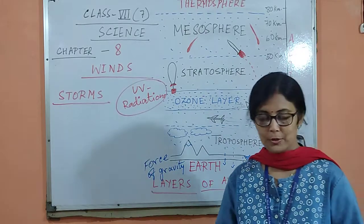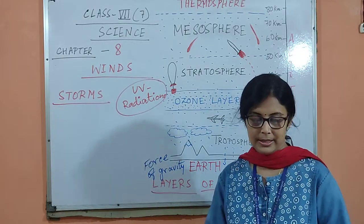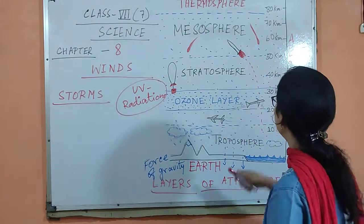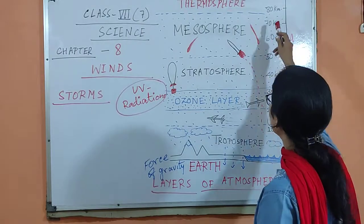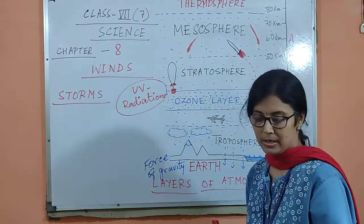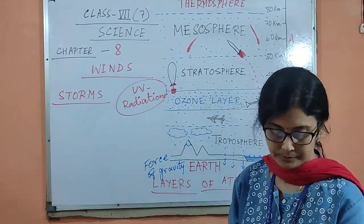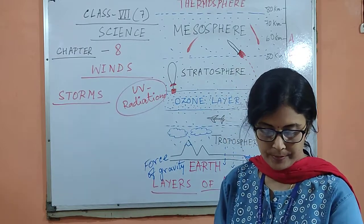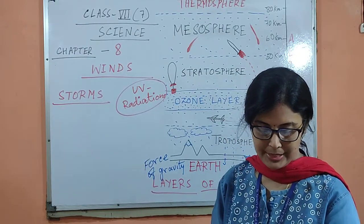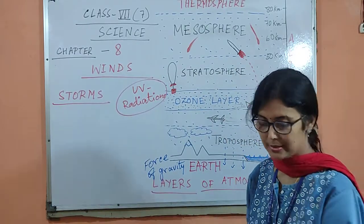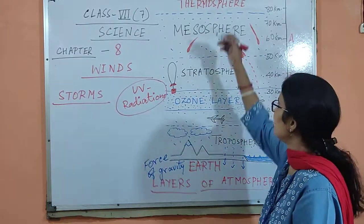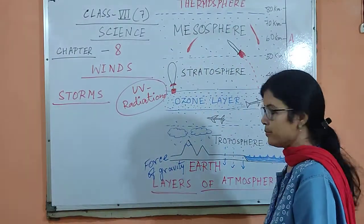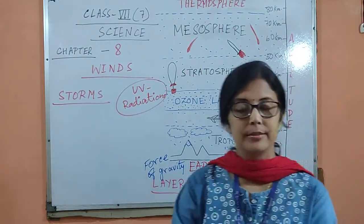Above the stratosphere, there is the mesosphere at a height of around 50 to 80 kilometers. And then, above that, is the thermosphere. These are the different layers of atmosphere.